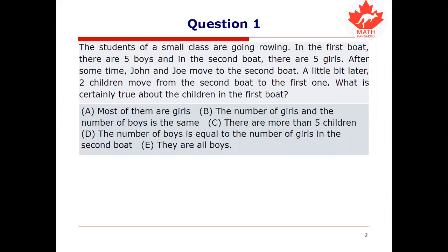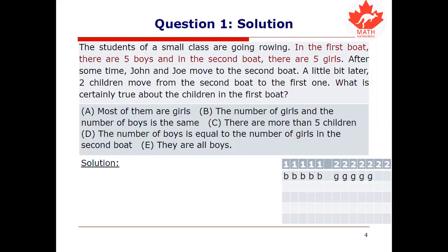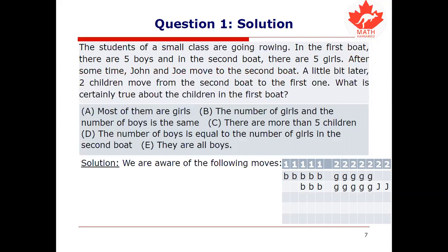Are you ready? Let's take it up. Here's the scenario as it started. In the first boat there are five boys and in the second boat there are five girls. I'm going to draw this out in a table — here are five nameless boys in the first boat and five nameless girls in the second boat. After some time, John and Joe move to the second boat. The first boat now has three boys and the second boat has five girls, John and Joe, the two boys who have moved.